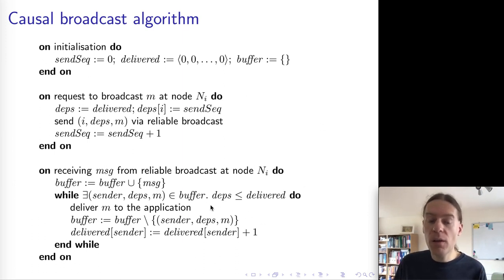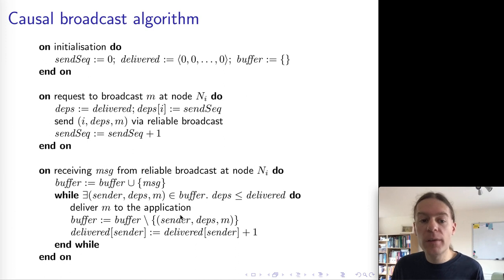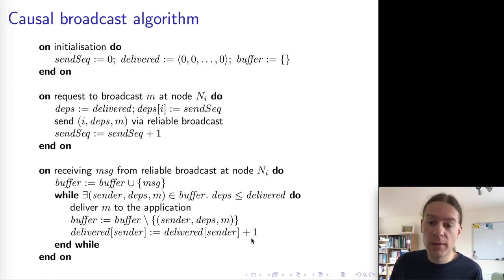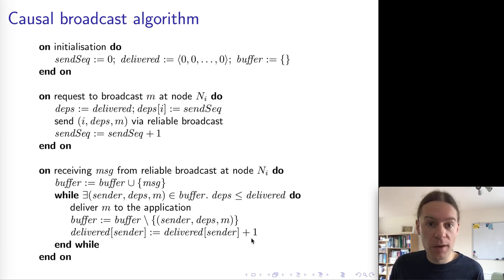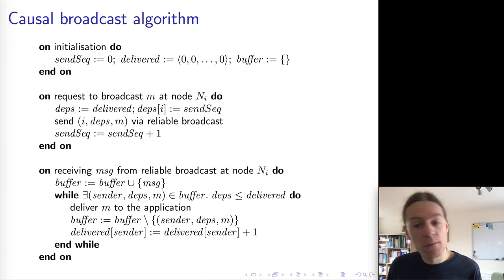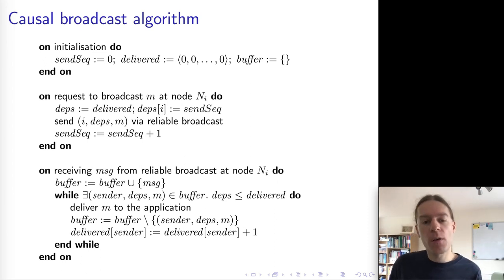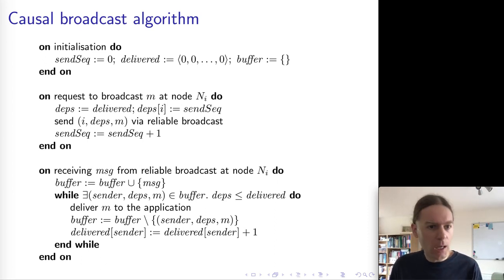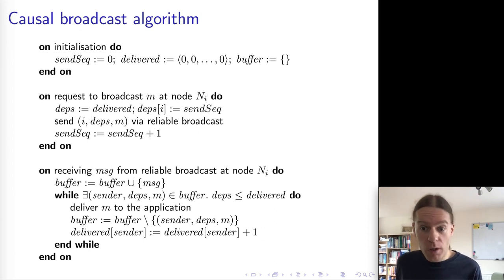If we have a message that satisfies the dependencies, we deliver it, remove the message from the buffer, and increment the number of messages we've delivered from that particular sender. This ensures causal broadcast. You might have to think about the algorithm for a little bit to convince yourself that it really is correct, but I think it is correct. So that is causal broadcast.